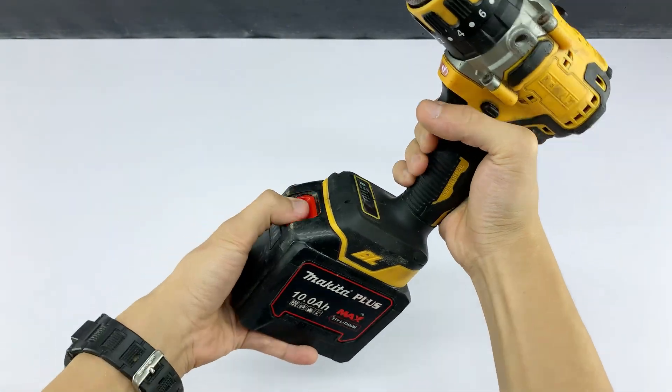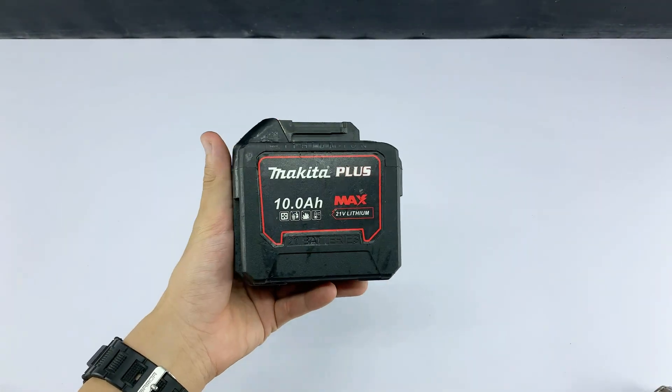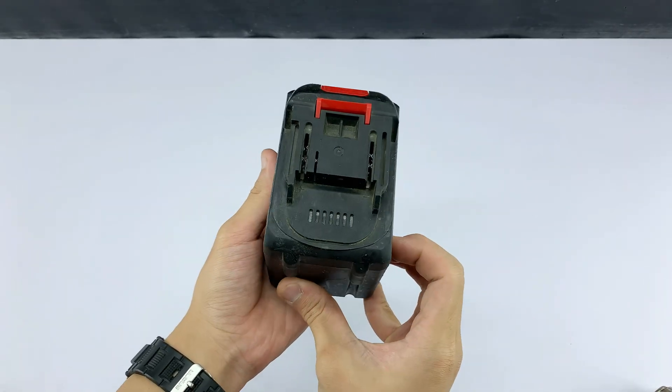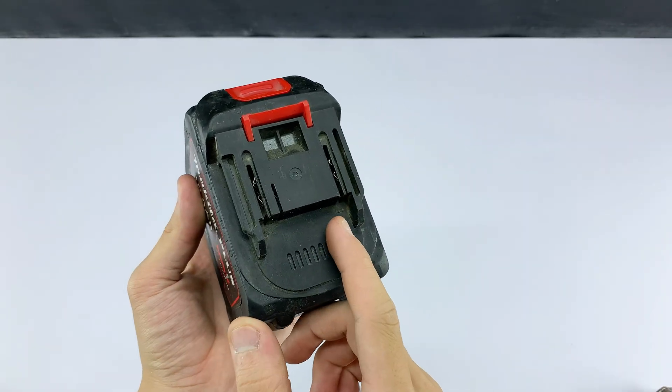This large Makita drill battery pack is going to be our main power source. I'm removing it from the drill. This powerful battery will provide the energy our modified soldering iron needs.